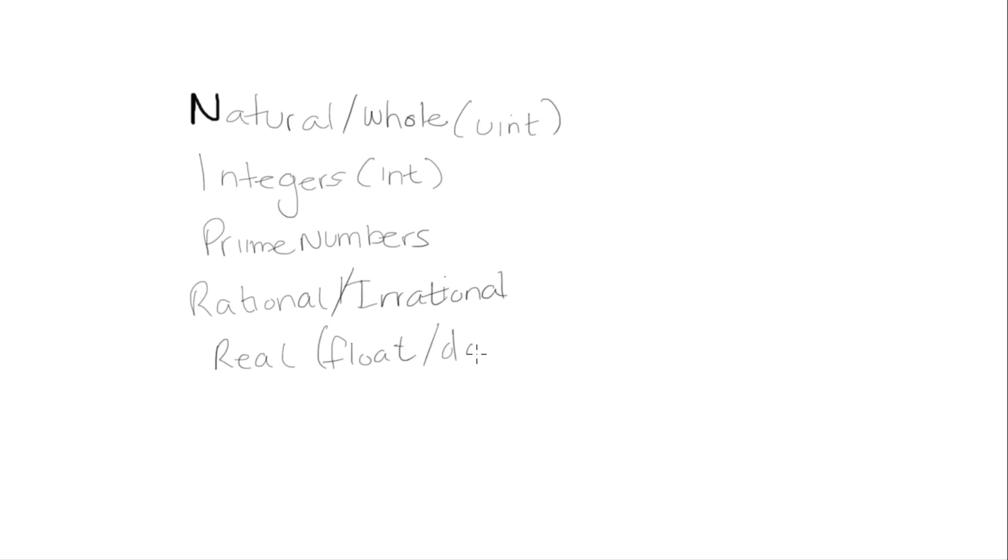A natural or whole number—the reason why I put u int is that an unsigned integer is any integer that is zero to whatever the max value is. In this case, a natural or whole number is any positive whole number from zero to infinity. What is a whole number? It is a number that doesn't contain any decimal, so it could be one, two, three, four, five. A whole number cannot be negative though.